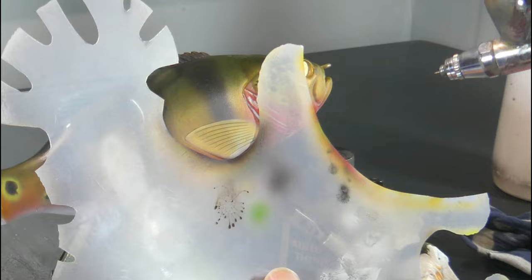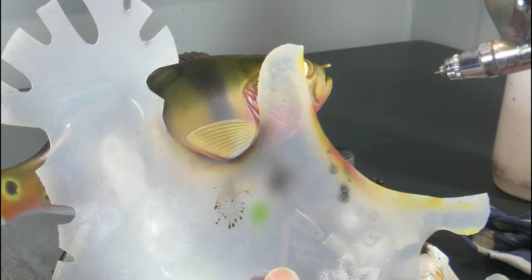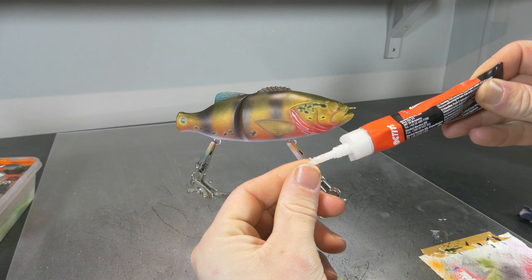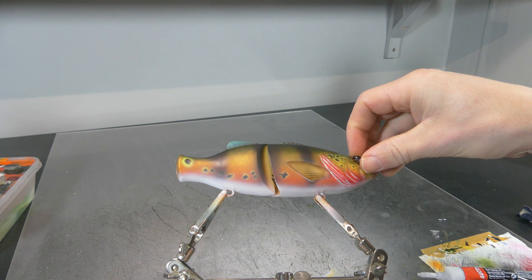With a little bit of Vallejo game air desert sand I am giving these fins a nice and natural darker yellowish color. And now with a little bit of wicked detail sepia I am making those edges of the fins a little bit darker to give it a little bit more depth.